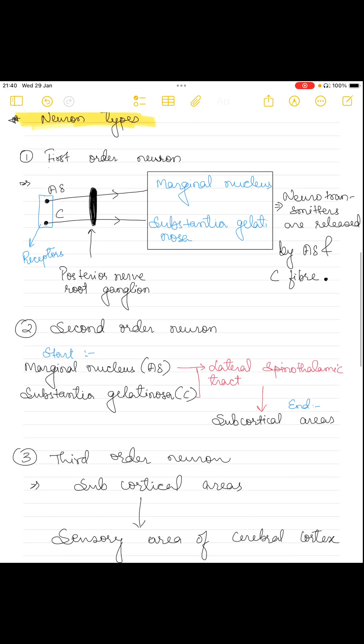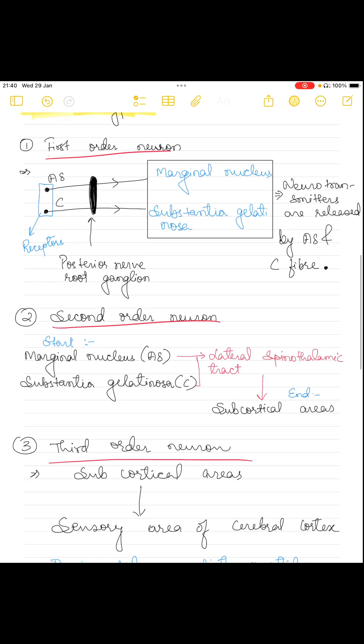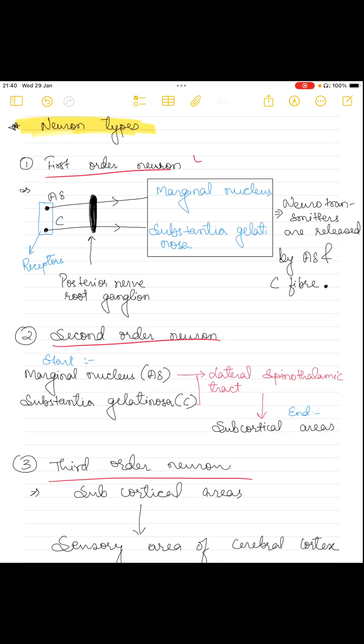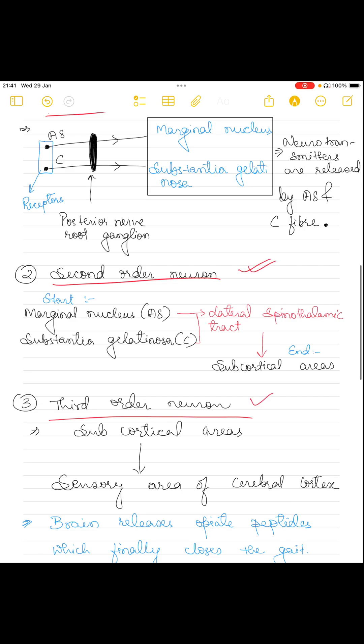Now let's talk about the neuron types. There are first-order neurons, second-order neurons, and third-order neurons. In normal intensity pain, only the first-order neuron comes into action, but when the pain intensity is too much, the second-order neuron and third-order neuron come into action.